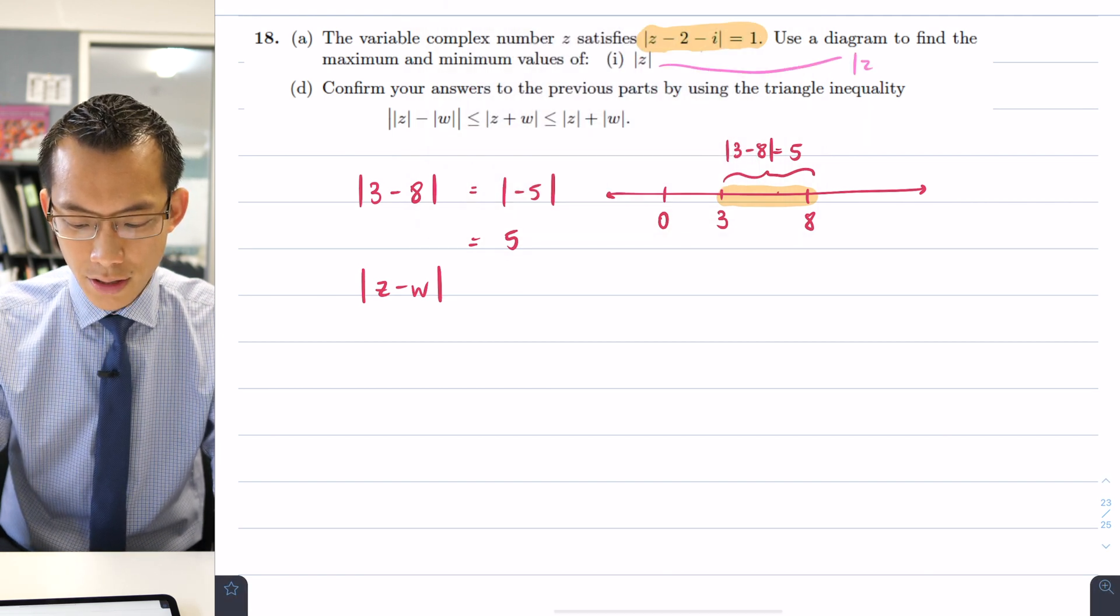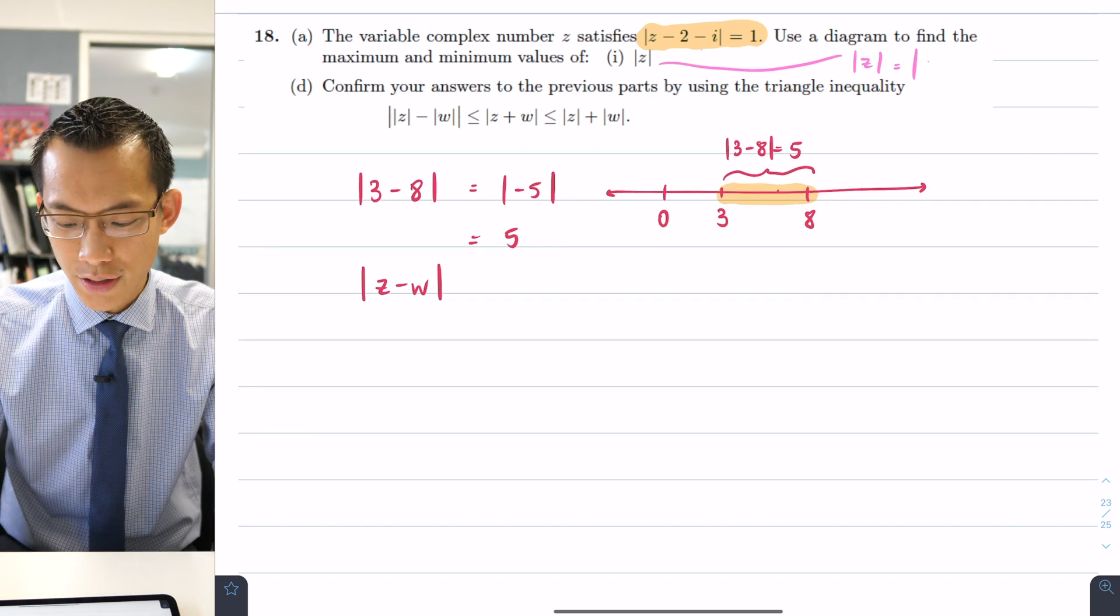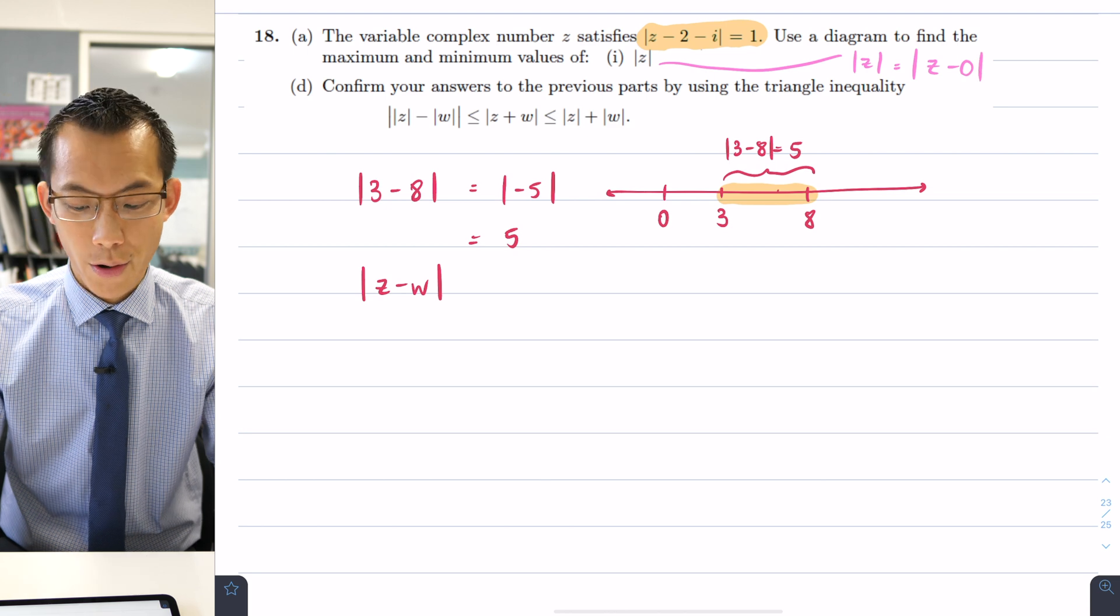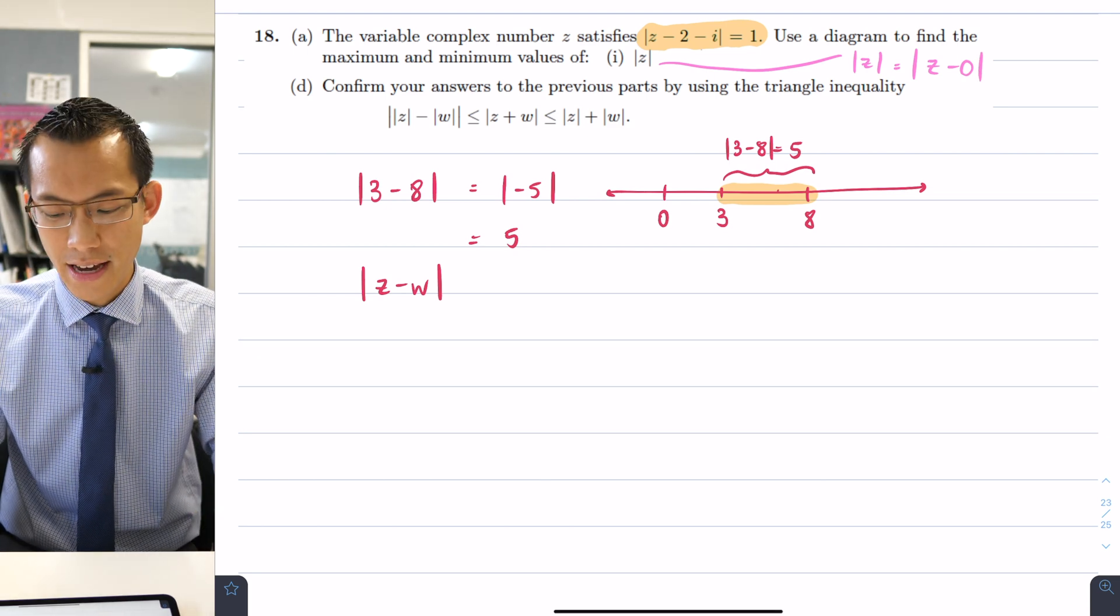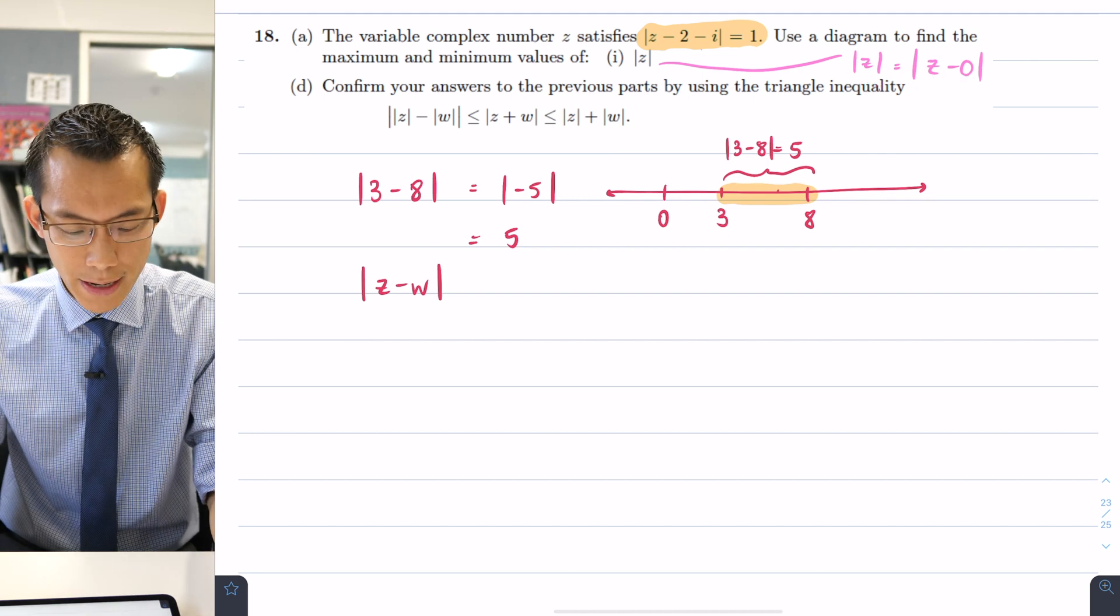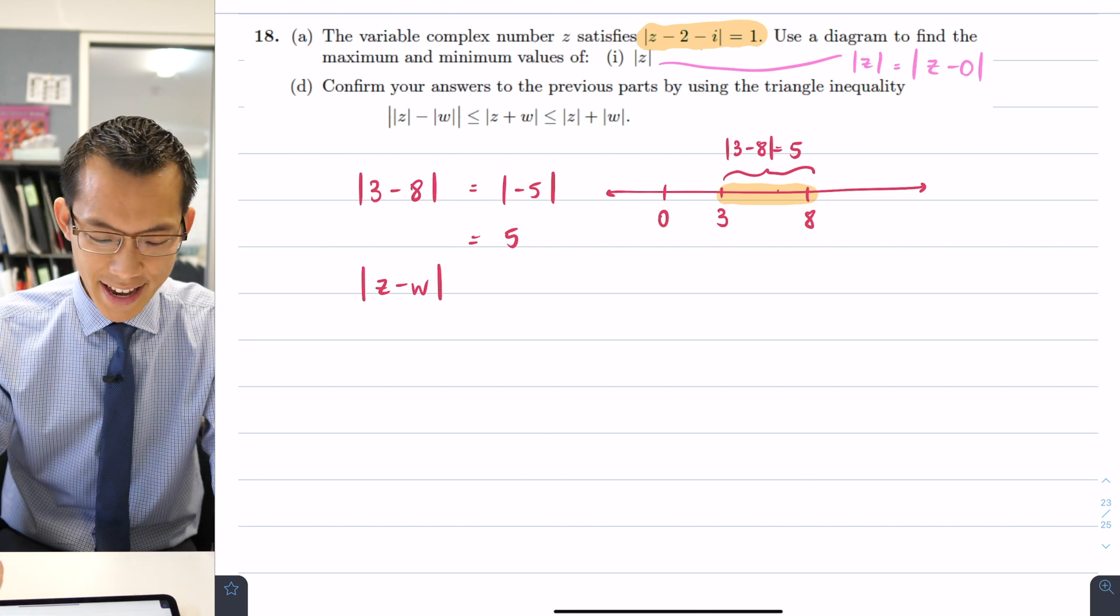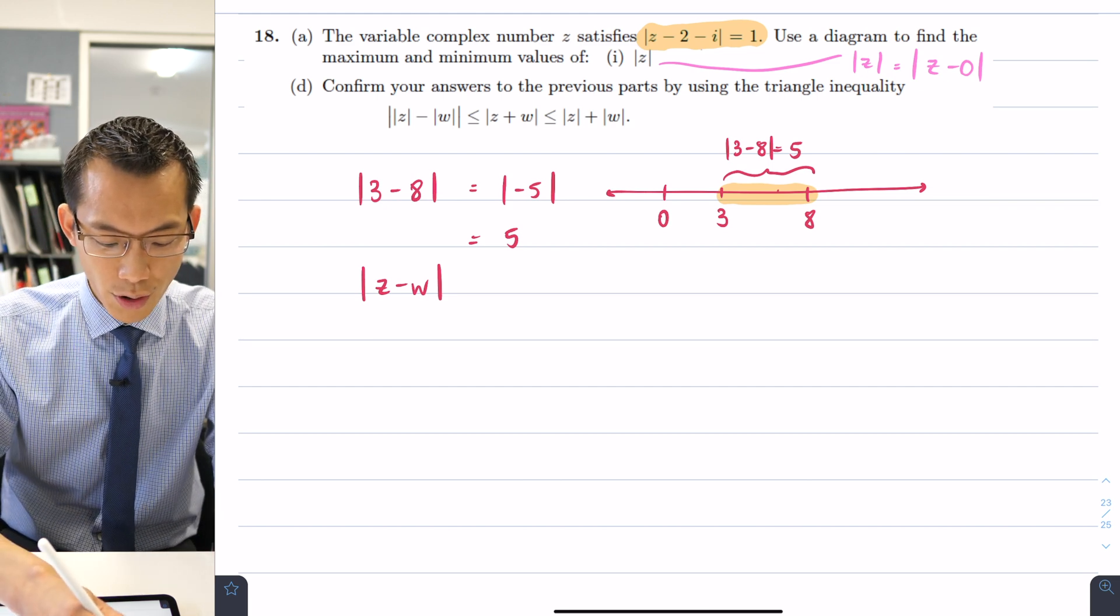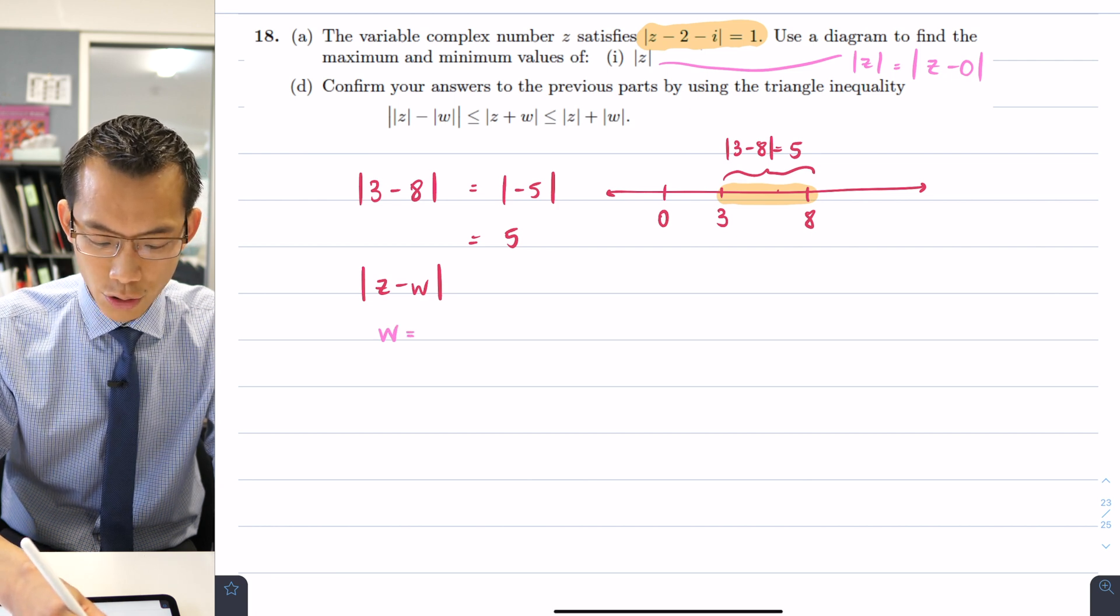the modulus of z we really have just a special case of the absolute value. It's the absolute value of z take away 0. In other words the distance between or the distance I should say z and the origin which is what we define the modulus to be. So what we're saying here in this particular case is we've got a particular value of w being this is going to be 2 plus i.